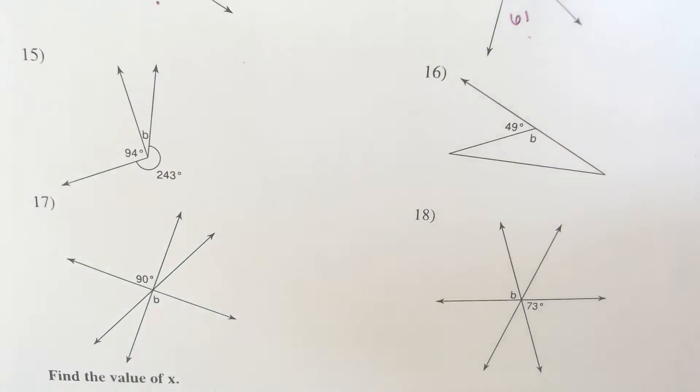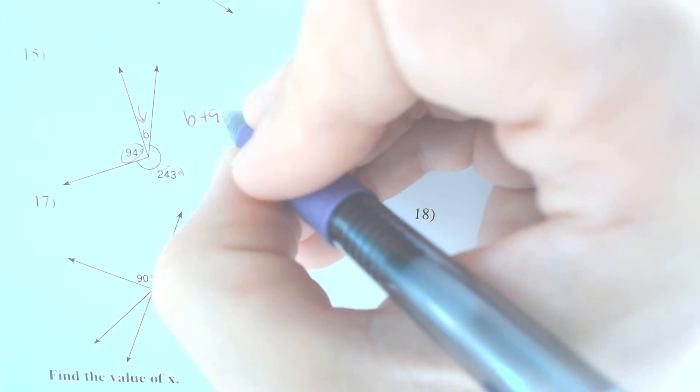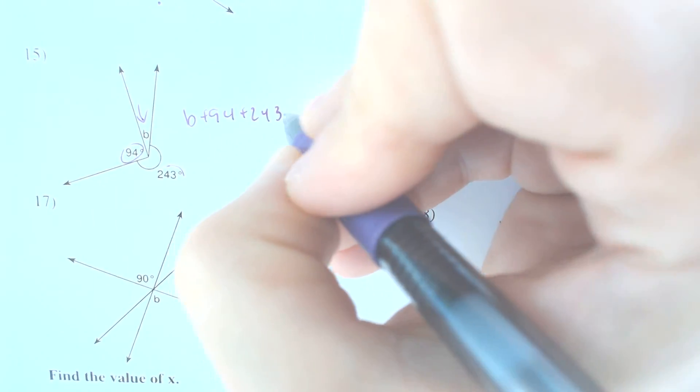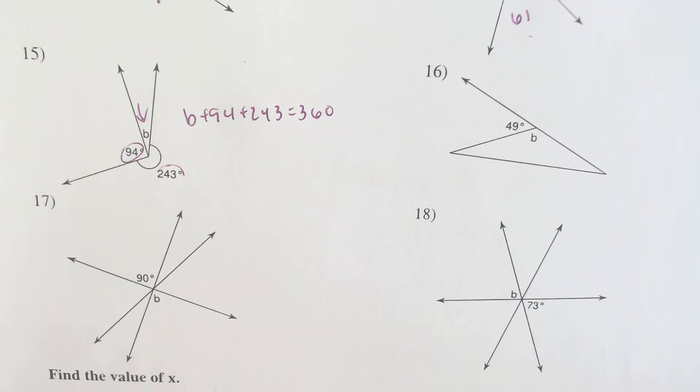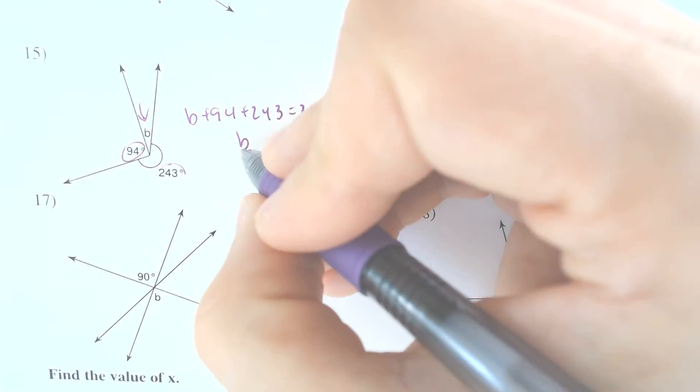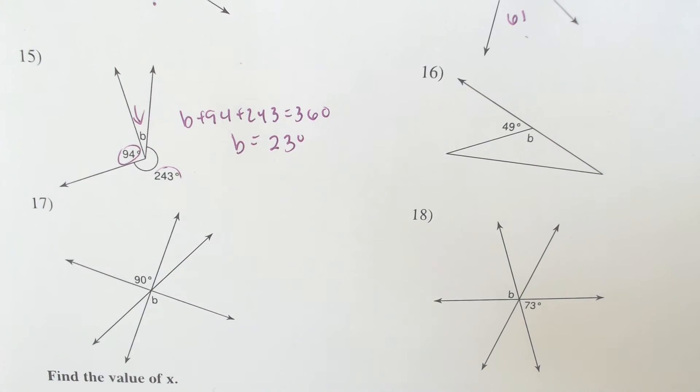We got another 360. So we have this 243, we got that 94 and that B all have to add together to make 360. So if we do 360 and we subtract the 243 and we subtract the 94, you end up with B is equal to 23 degrees.